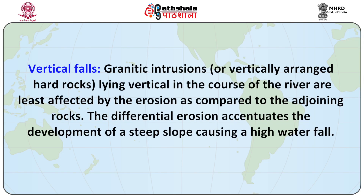Next is vertical fall. Granitic intrusions or vertically arranged hard rock lying vertical in the course of the river are least affected by erosion compared to the adjoining rocks. The differential erosion accentuates the development of a steep slope, causing a higher waterfall. Yellowstone River Fall is an example of this type of fall. Here a dike stands adjoining weaker rocks, and the Yellowstone River has made a stupendous fall when it flows over it, cutting deep gorges as it descends. Such falls do not recede upstream in comparison to falls produced on horizontal rocks because there is no undercutting of soft rocks.